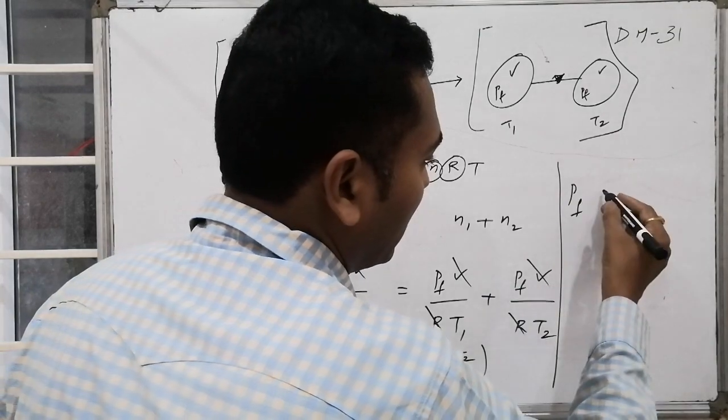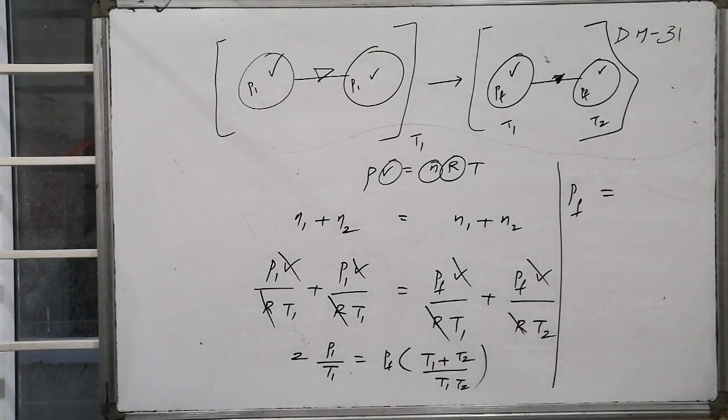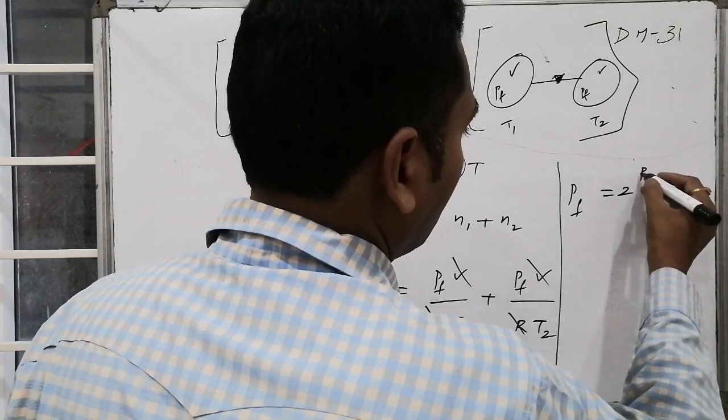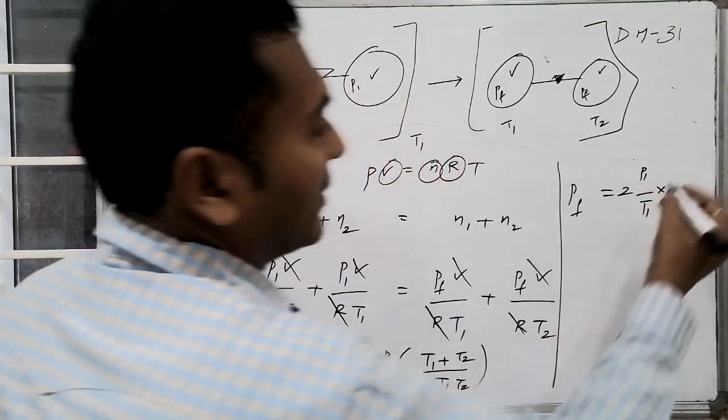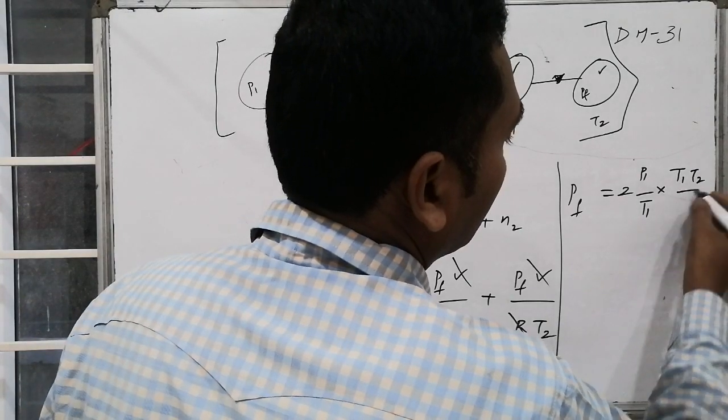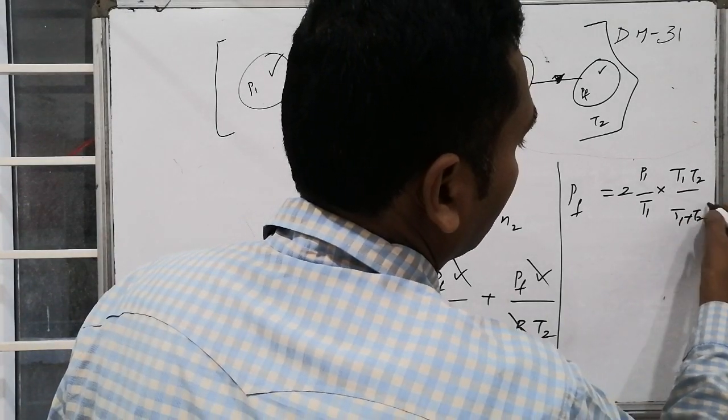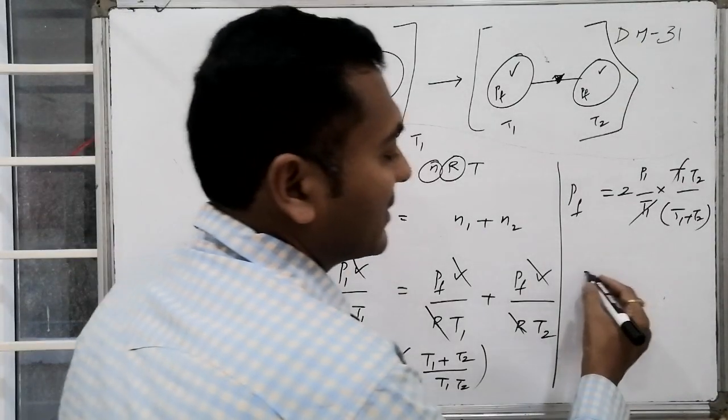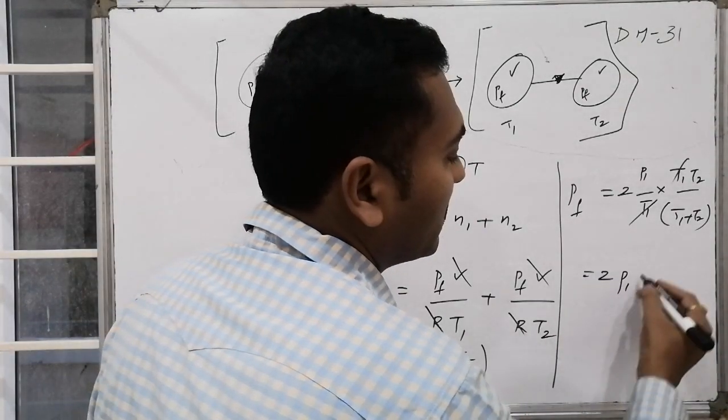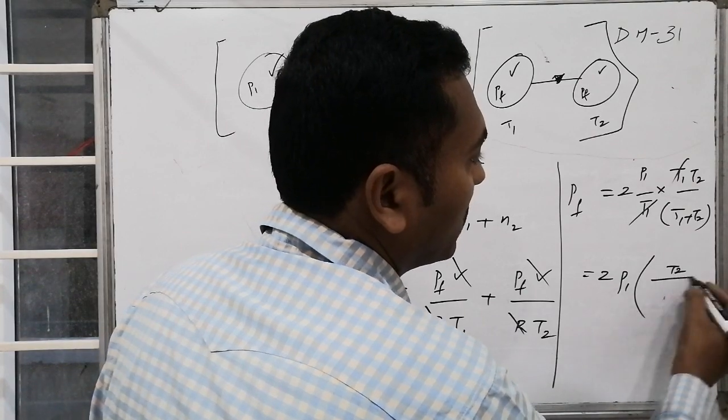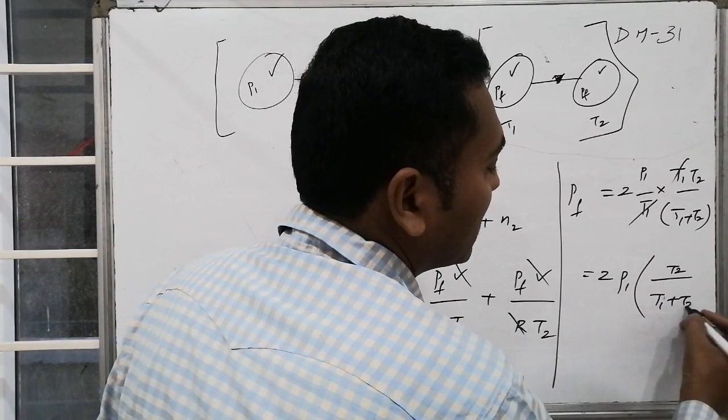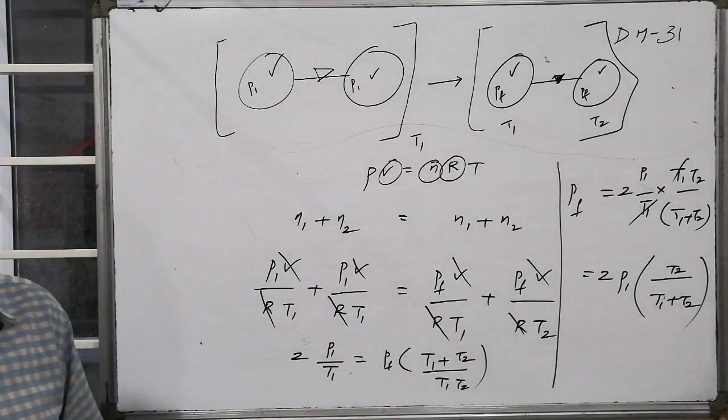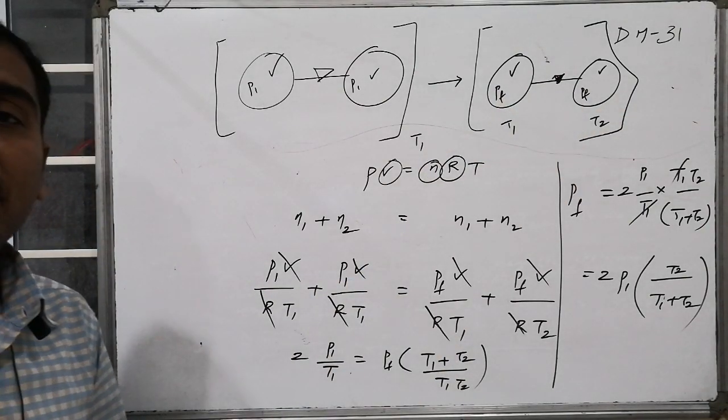Pfinal equals 2P1/T1 times (T1×T2)/(T1+T2). One T1 cancels, giving Pfinal = 2P1T2/(T1+T2). This is the final pressure present in cylinder 1 as well as cylinder 2, because pressure is an intensive property.